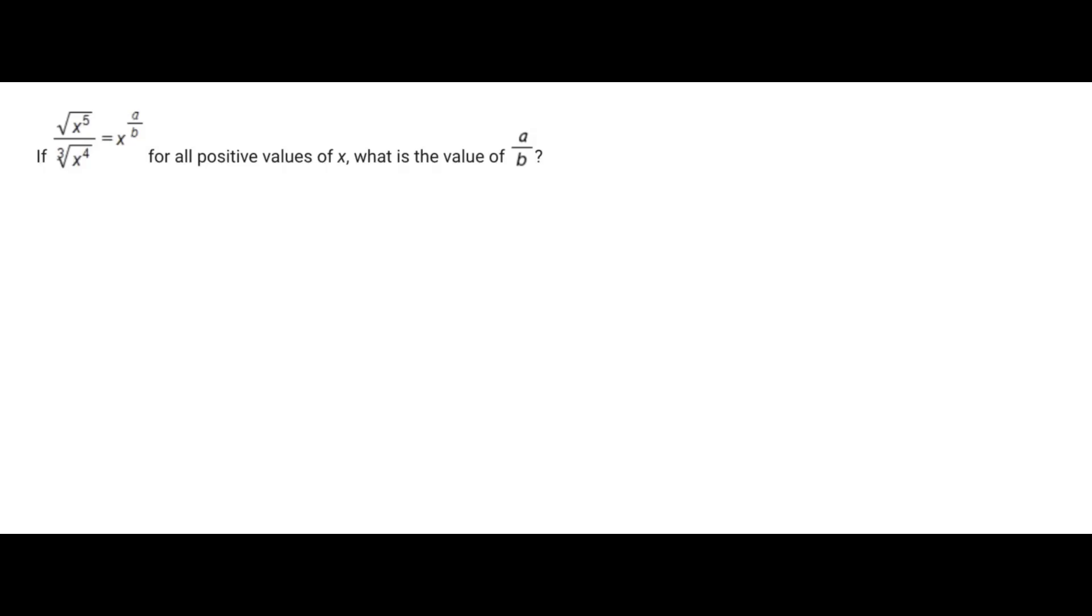Hey everyone, so for today's SAT problem, it says if square root of x to the fifth over cube root of x to the fourth equals x to the power of a over b for all positive values of x, what is the value of a over b?